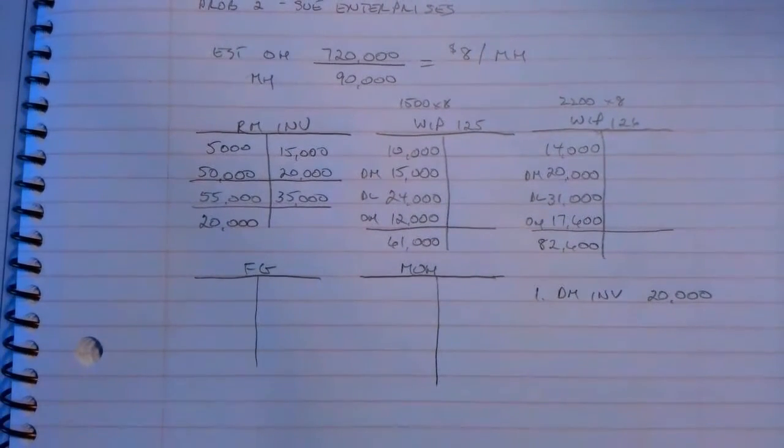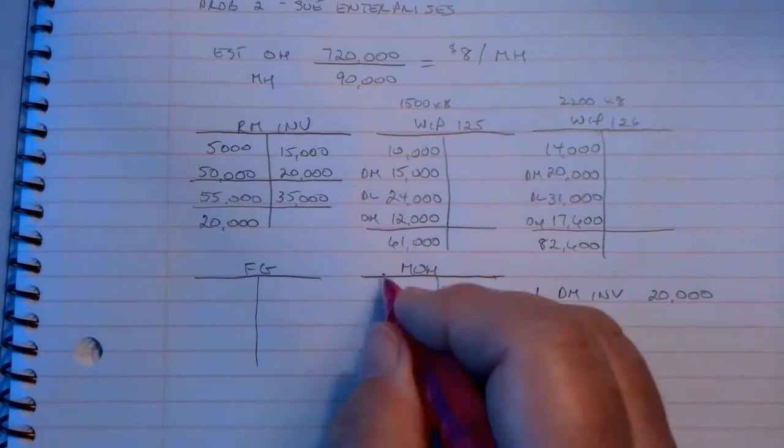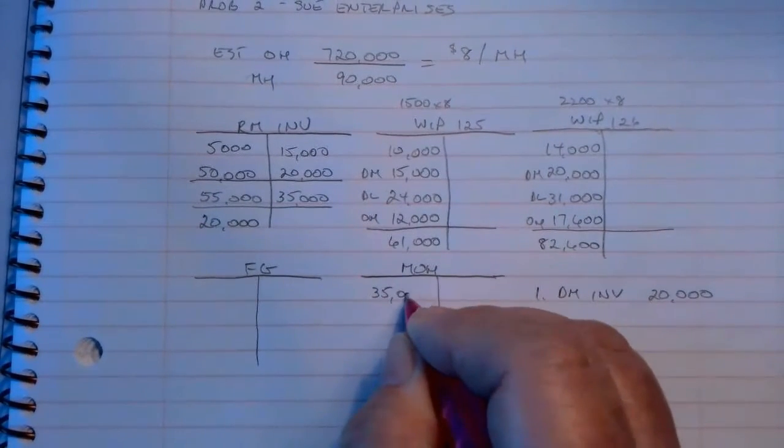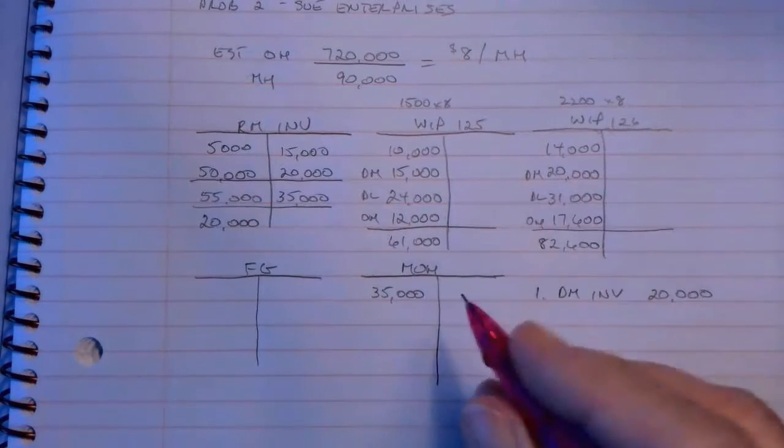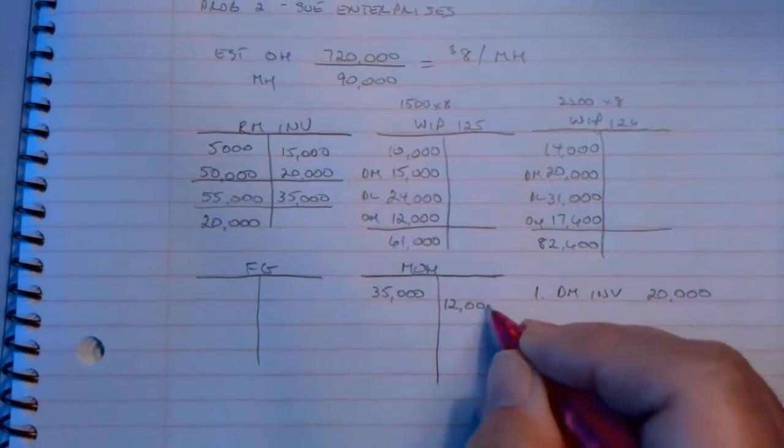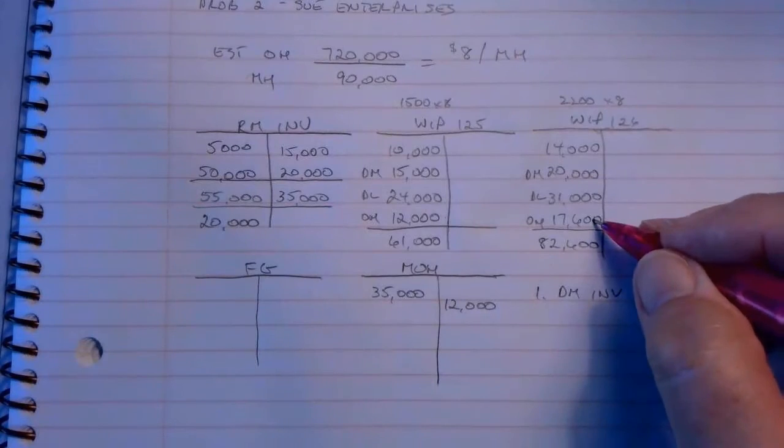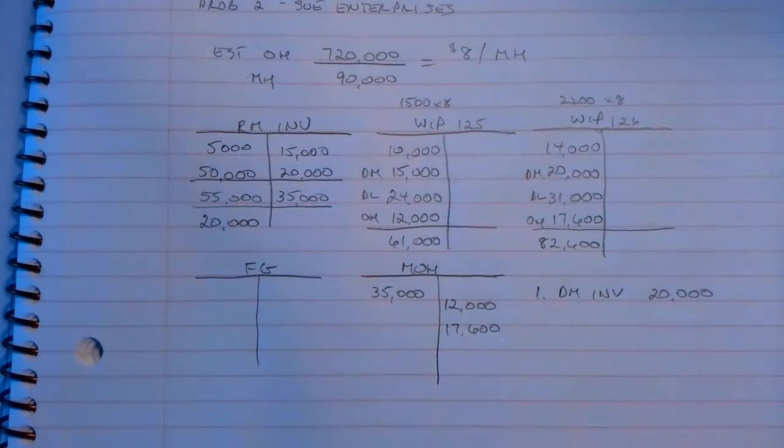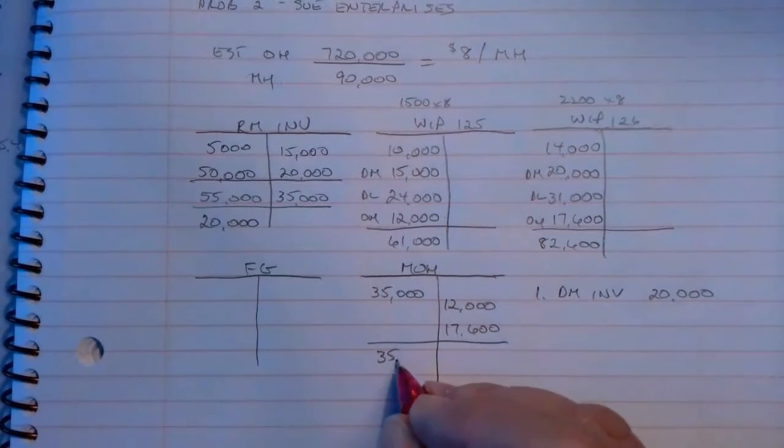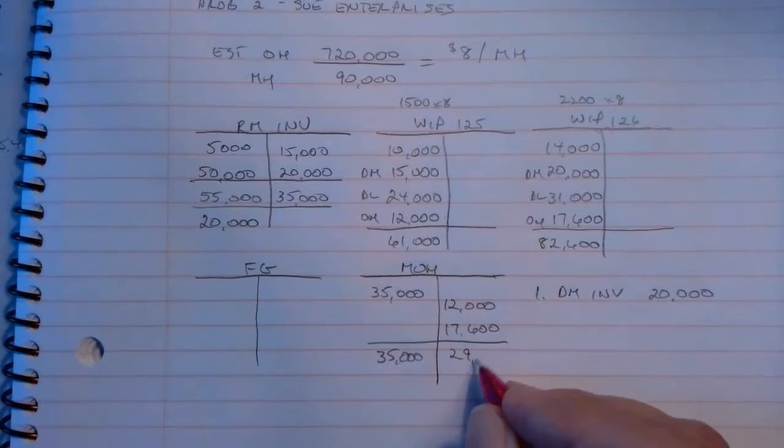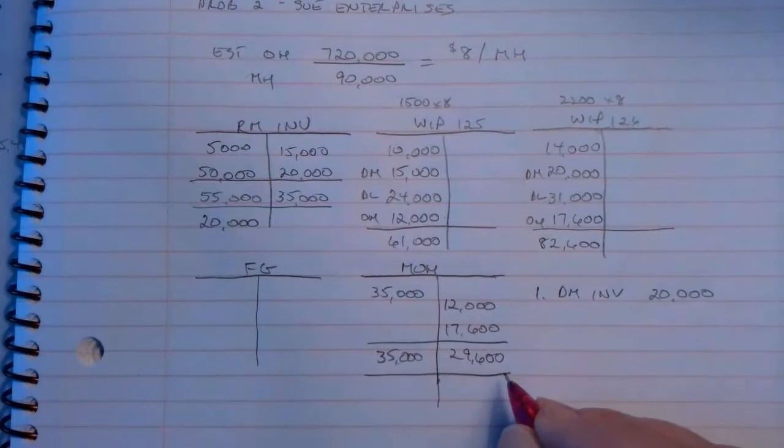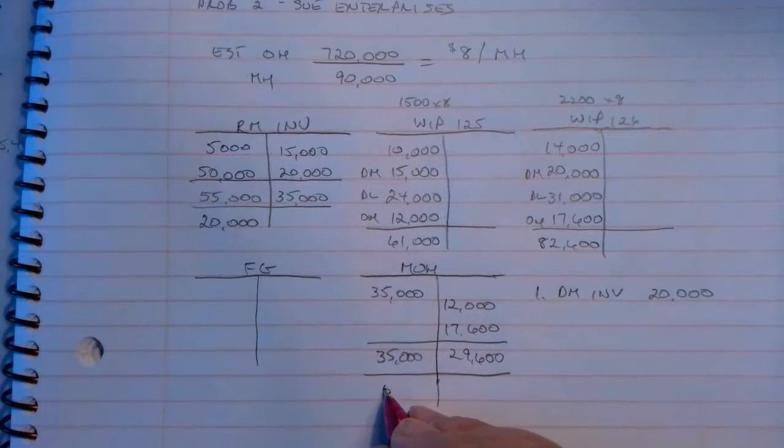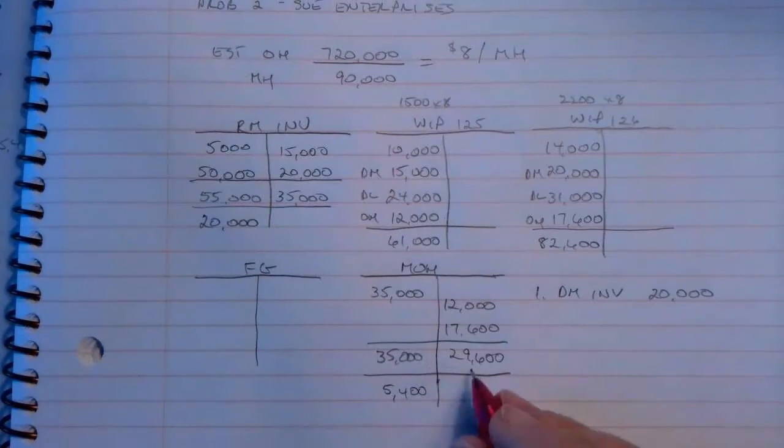If actual overhead in August was $35,000, actual would go here on the debit side—that's $35,000. What was applied was $12,000 to 125 and $17,600. That's the overhead that was applied. So I've got a total of $35,000 and $29,600. I've got $5,400 difference here, and it is under-applied.